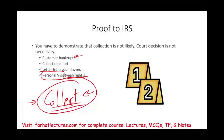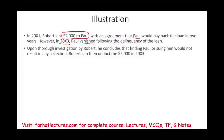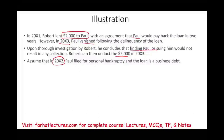Let's assume in 20X1, Robert lent two thousand dollars to Paul with an agreement that Paul would repay the loan in two years. In 20X3, Paul vanished and never paid back the loan. Upon thorough investigation, Robert concluded that suing Paul or finding him was not a good idea — it would be a waste of time. Robert can then deduct the two thousand dollars in 20X3. Now let's assume in 20X2, Paul filed for personal bankruptcy and the loan is classified as a business debt.